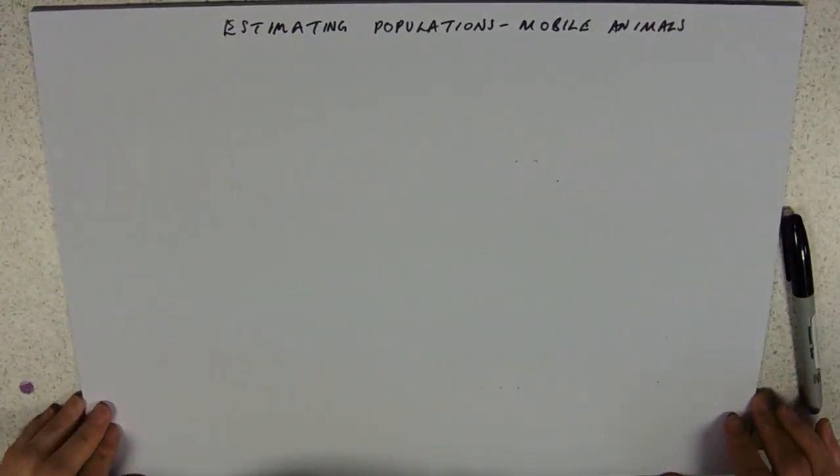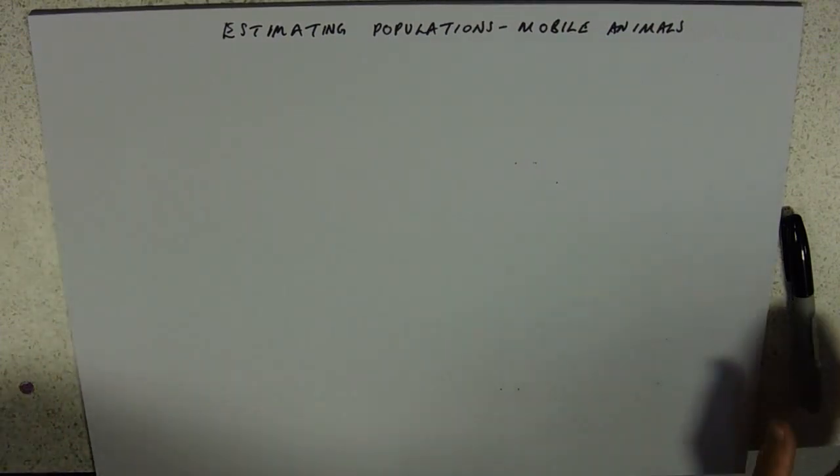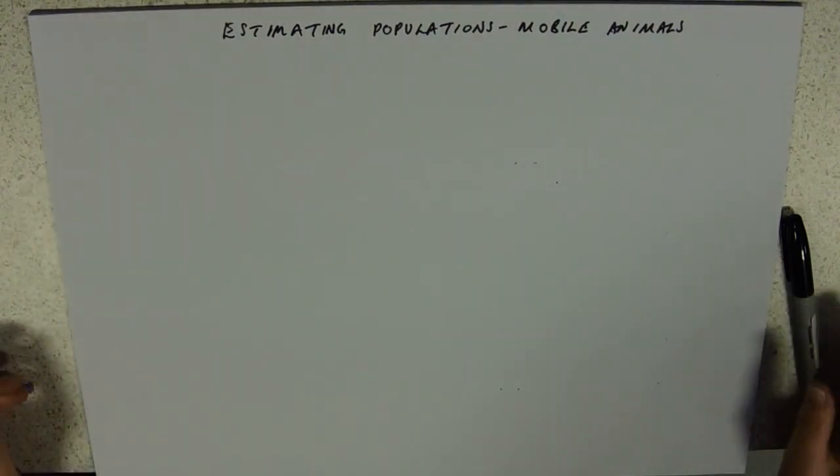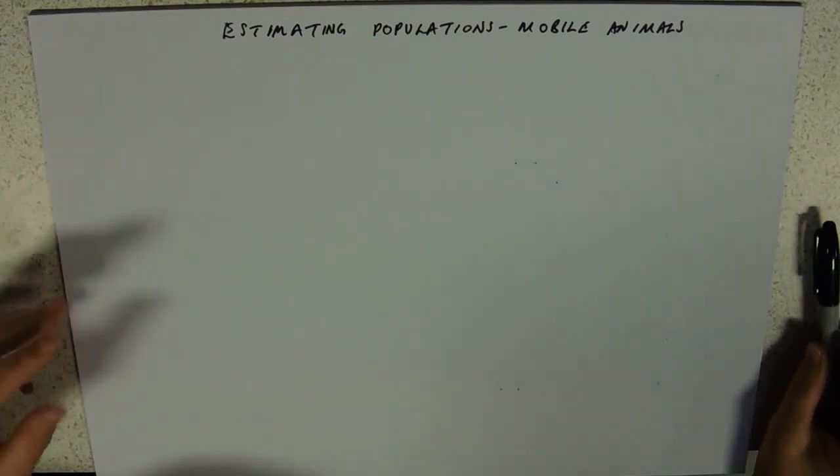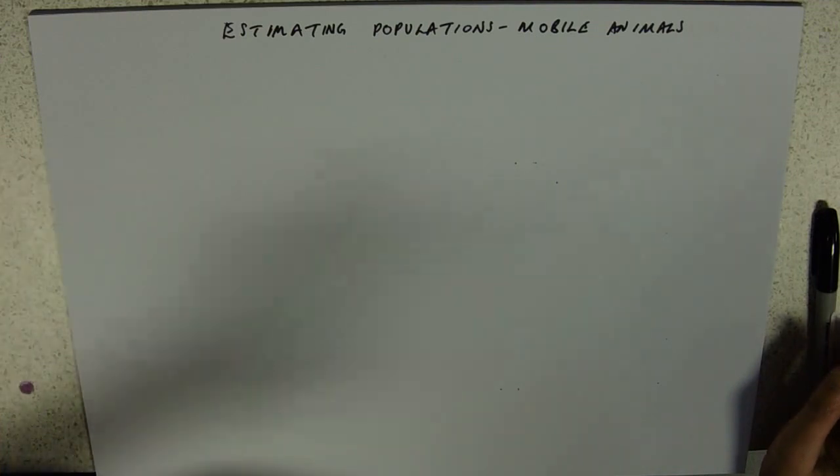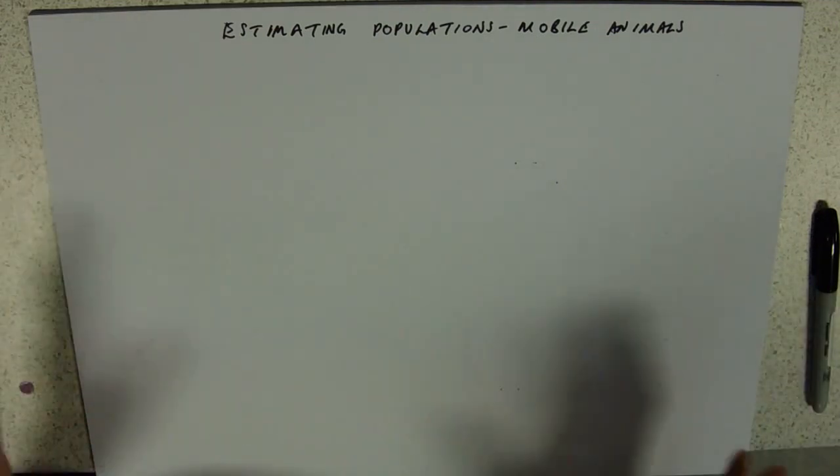Okay, in the last video I talked you through doing things that are sessile, things that can't move. I just thought for the sake of completeness I'd do estimating populations of mobile animals. It's not one of your specified practicals, however I think it is one of these where you're applying things to an unfamiliar context.